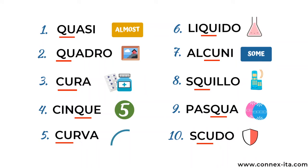OK, how did it go? I'm going to read them once more while you check if you got them right. Quasi — quasi means almost. Quadro — quadro is a painting. Cura — cura means a therapy, treatment. Cinque — cinque is number five. Curva — curva means bend. Liquido — liquido is the Italian word for liquid. Alcuni — alcuni means some. Squillo — squillo is a ring. Pasqua — pasqua means Easter. And scudo — scudo is the shield.